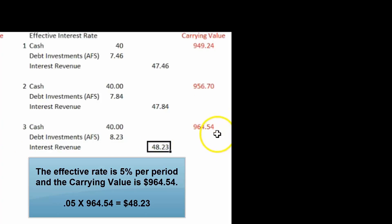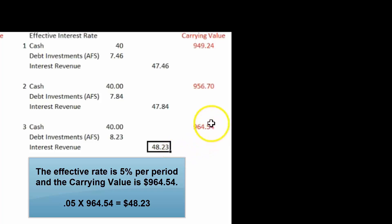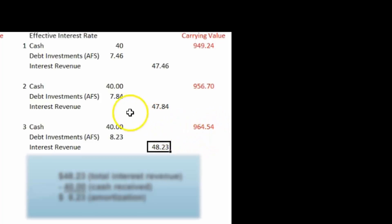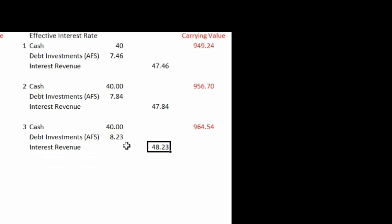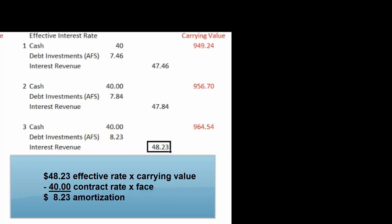Another six months go by. The carrying value at the beginning of that period is $956.70 plus $7.84, giving a carrying value of $964.54. Five percent times $964.54 gives me $48.23 of interest revenue. I know I'm getting $40 in cash, so to make the journal entry balance I debit debt investments (available-for-sale) for $8.23. We're doing exactly what the formula says: effective interest rate times the carrying value of the bonds, minus the contract rate times the face amount, gives the amortization.